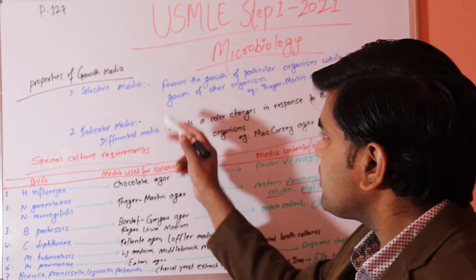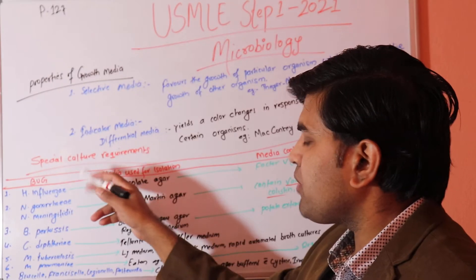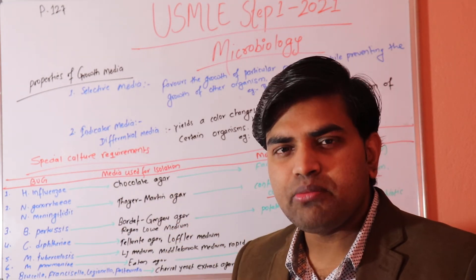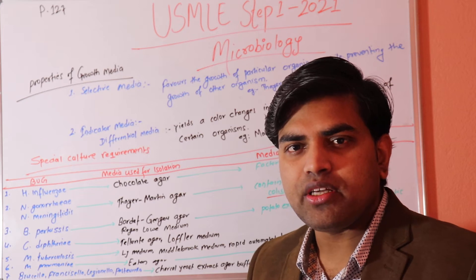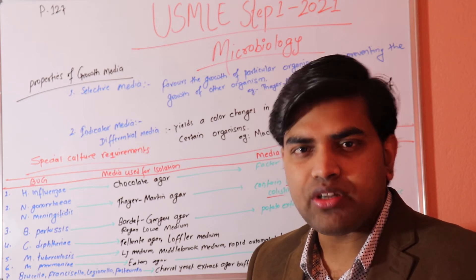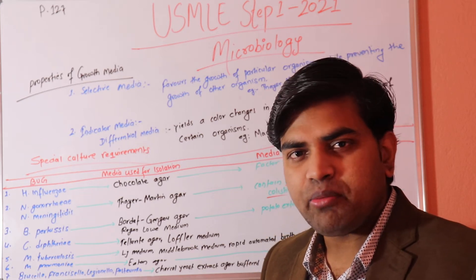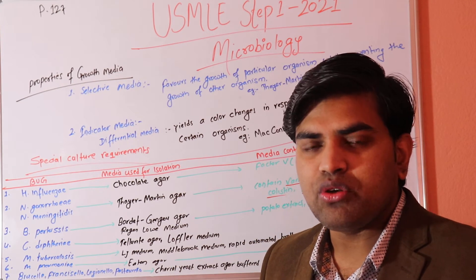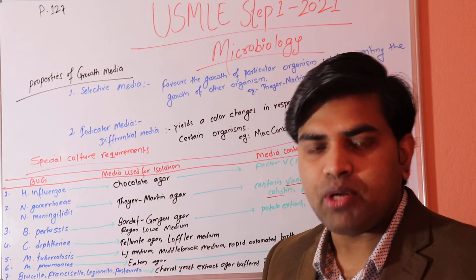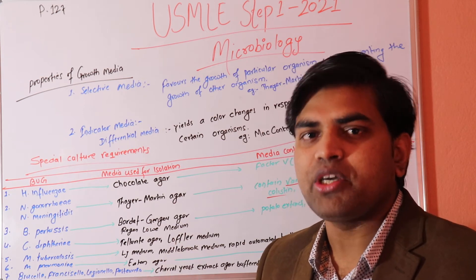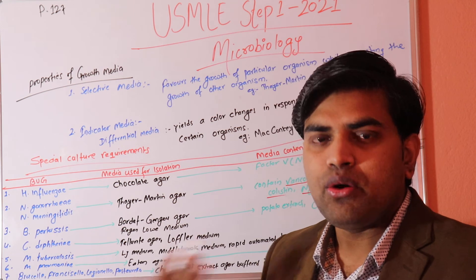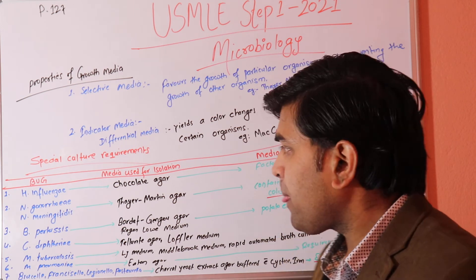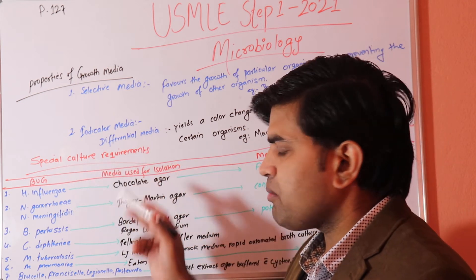To summarize the types of media: basic media is nutrient agar with only salt, water, and agar to maintain pH. When we add glucose it becomes glucose broth; adding blood makes blood agar; heating blood agar converts it to chocolate agar. In this way, the media are classified.